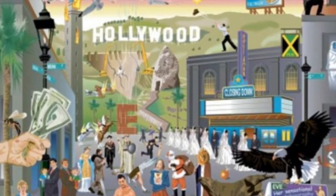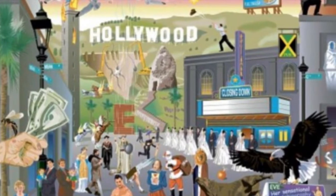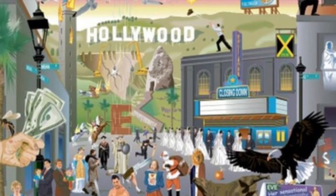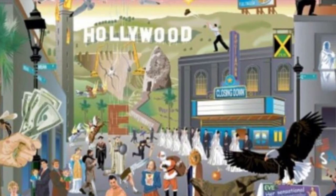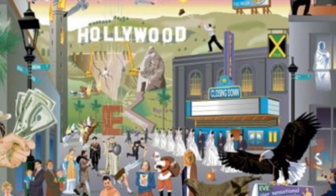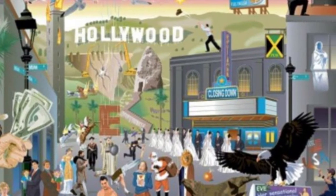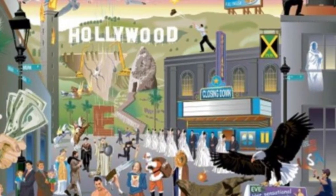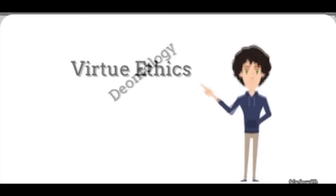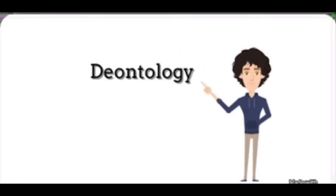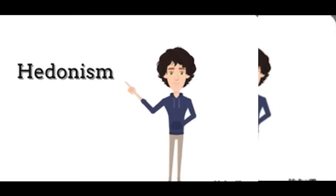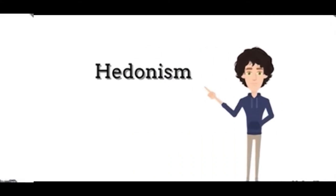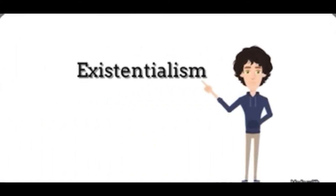Many films and novels can be a great means of understanding and applying ethical theories and thinking through complex moral situations. The ethical theories consist of virtue ethics, deontology, utilitarianism, hedonism, existentialism, and many more.